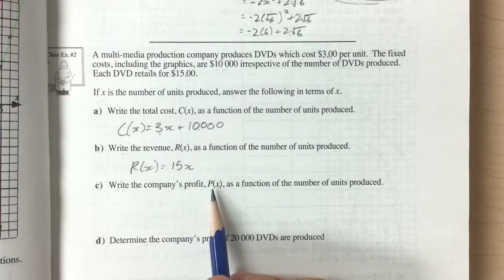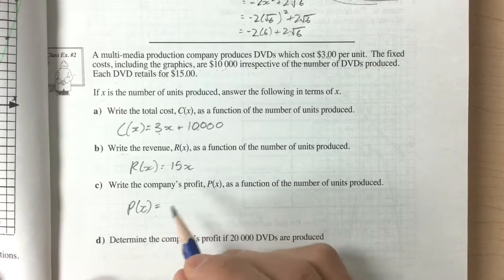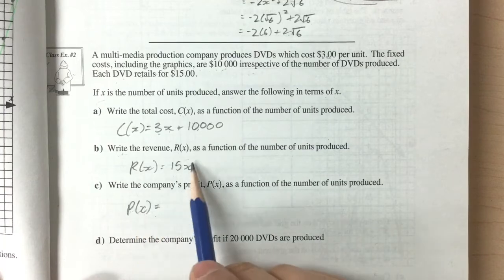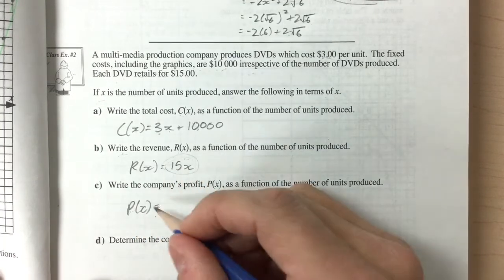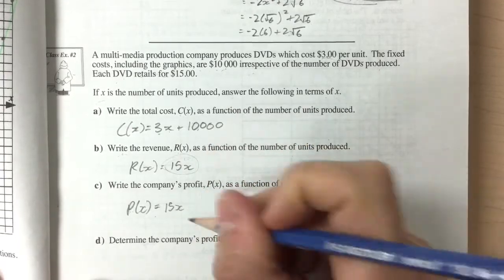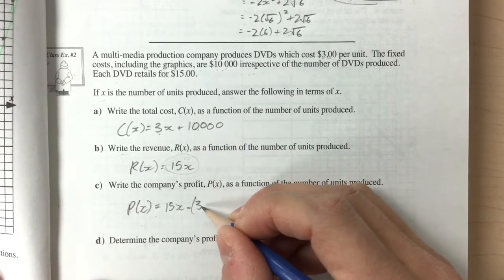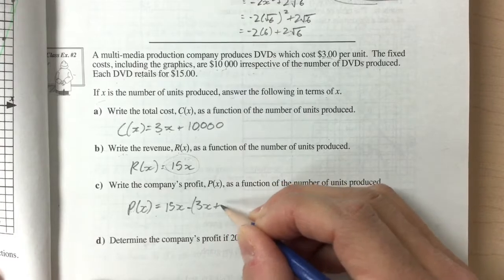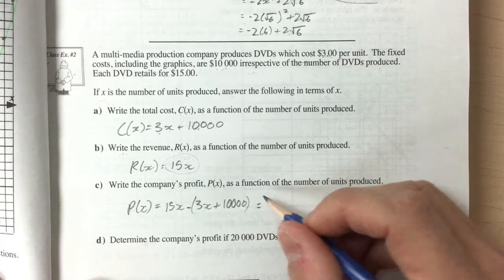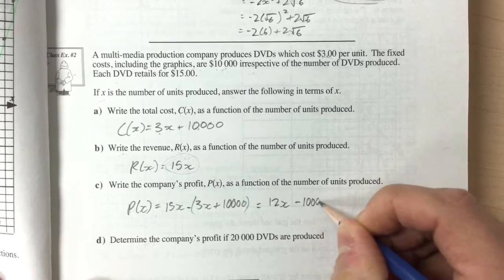And so if we want to write the company's profit as another function, so p of x. P of x is going to come from the profit that the company produces, which is going to come from how much they actually make. So 15x, and we'll have to subtract the amount that we spend in order to make those DVDs. So 15x minus 3x plus $10,000. And this is equal to 12x minus $10,000.